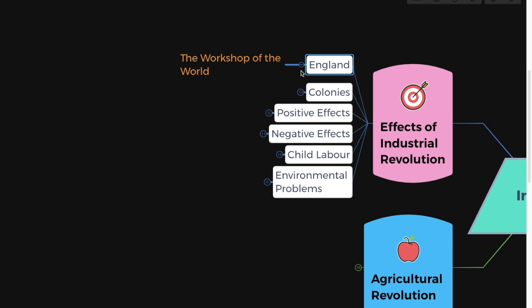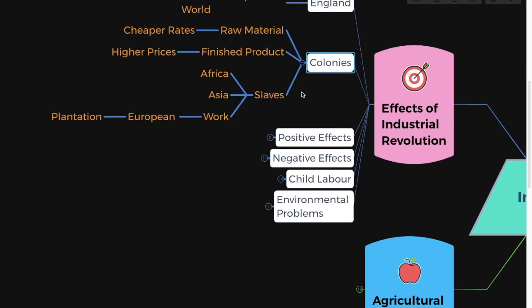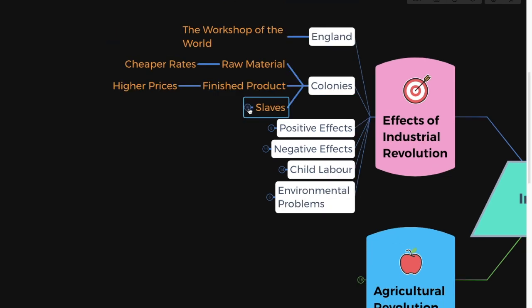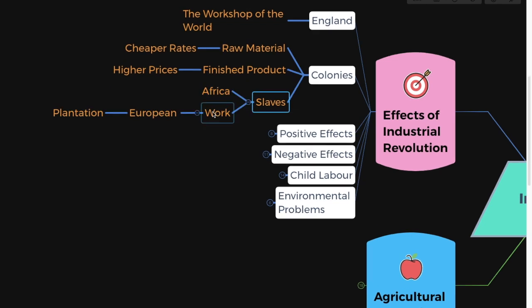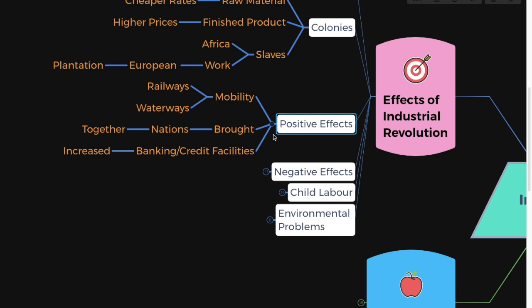So what effect did the Industrial Revolution have on society? England was called the workshop of the world. The English had their colonies in different parts of the world, and it was very easy for them to get raw material at cheaper rates. They used to sell the finished products at higher prices, and they also used to get slaves from Africa to work on the plantations of European masters.